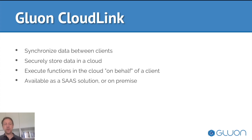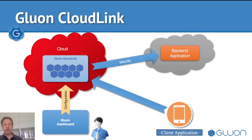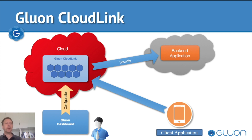It is available as a SaaS solution or also on-premise. From an architecture standpoint, the client application — desktop, mobile, or embedded — does not directly connect to the backend application. It does not contain the credentials that give access to the backend application, but it talks to Gluon CloudLink, which is hosted in a cloud. And then from Gluon CloudLink, where you configure settings using the dashboard — which is a web interface — it goes to the backend application in a secure way.